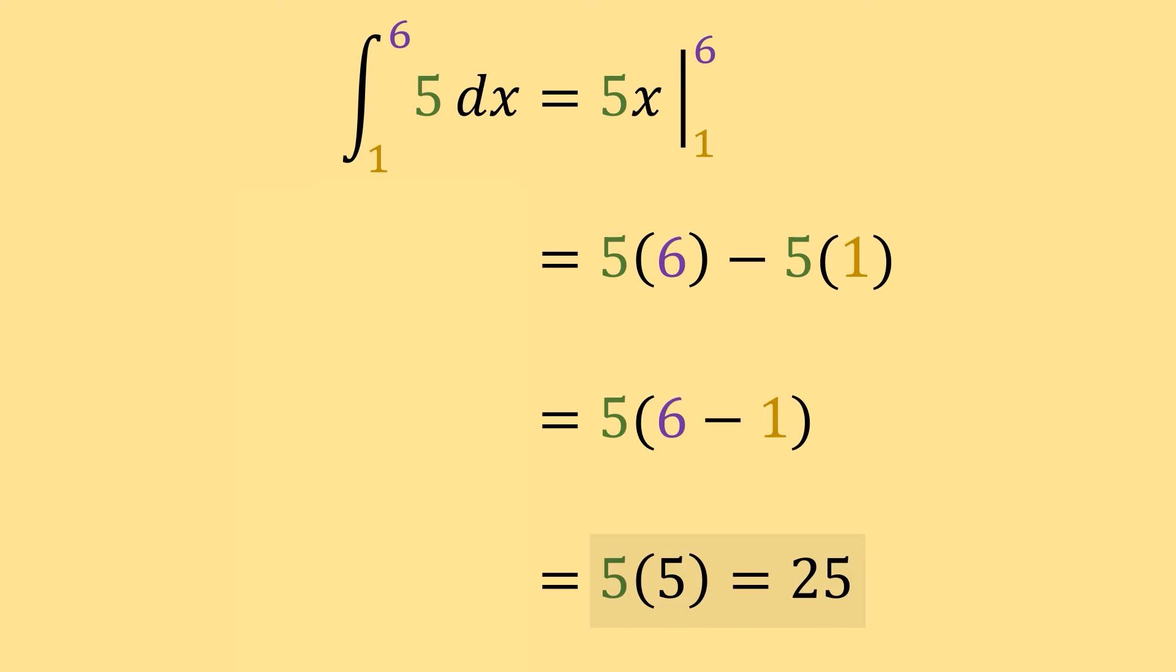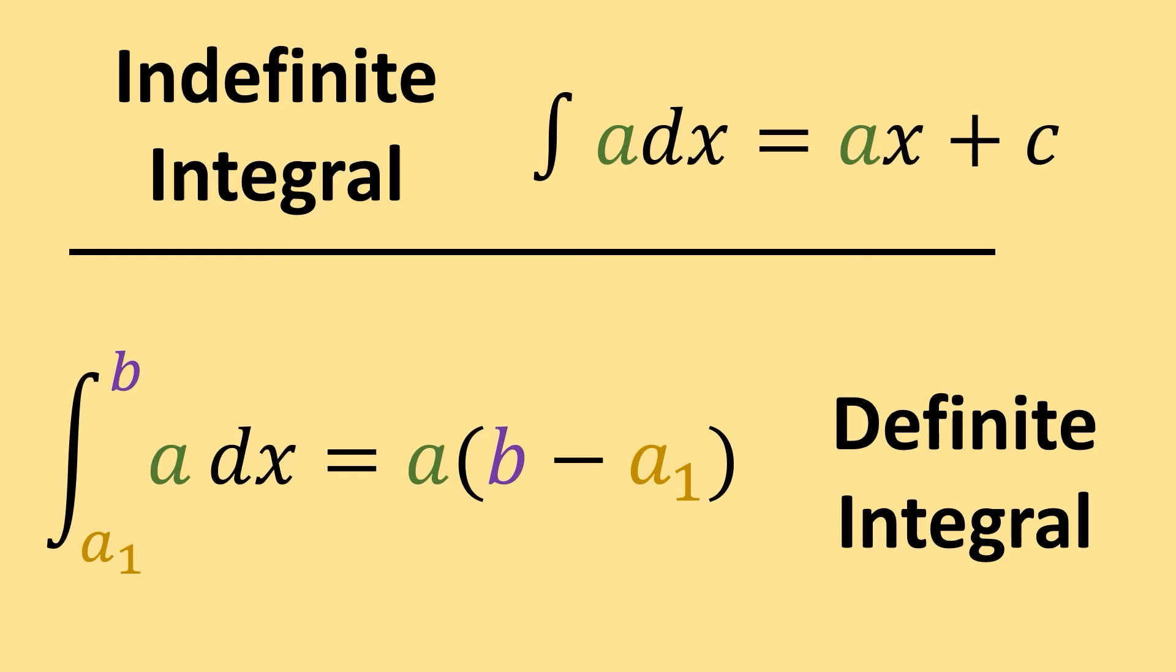And the reason I factored the 5 out is this form that we get on this third line can be used any time we're integrating a constant that is bounded. And so, any time we're integrating a constant, if it's not bounded, the result's going to be the constant times the variable you're integrating with respect to plus c. And then if you have a bounded integral of a constant, the final result you can jump to is the constant times the top bound minus the bottom bound.